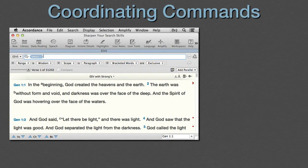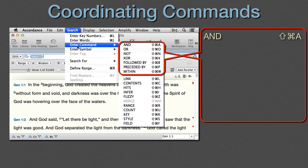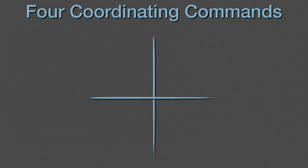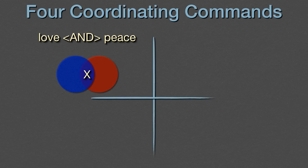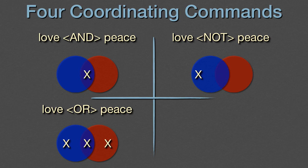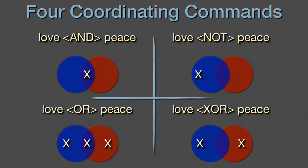Coordinating commands. Now let's take a look at the coordinating commands. There are seven of them, all under the search menu. In order, they are: AND, OR, NOT, XOR, followed by, preceded by, and within. The keyboard shortcut for each is Shift+Command plus the first letter of the command — the only exception is 'followed by,' which uses B for 'behind.' AND means both or all the words must appear in the same verse. OR means the verse can have at least one of the words, but can have both. NOT means the verse must have the first word but cannot have the second. XOR means the verse can contain either word, but not both.